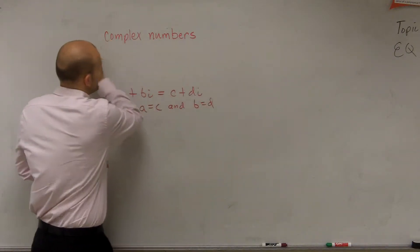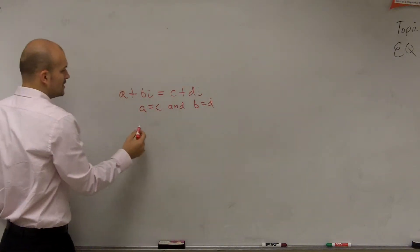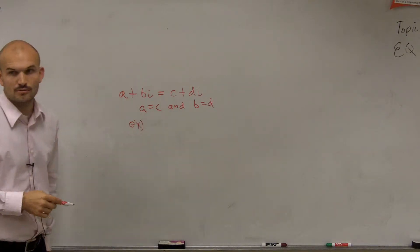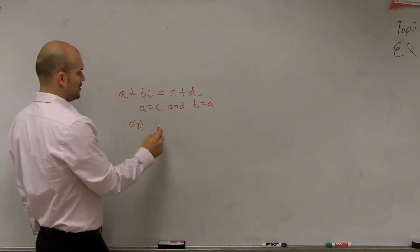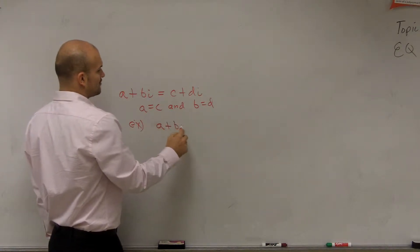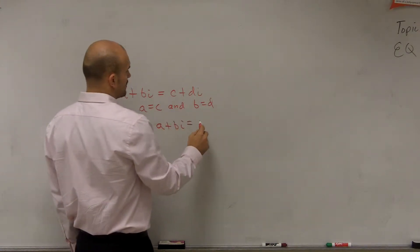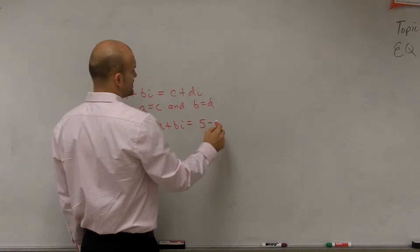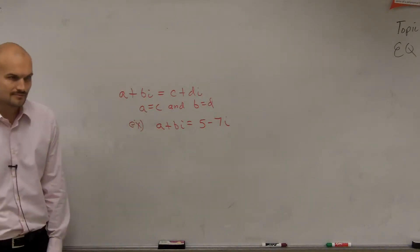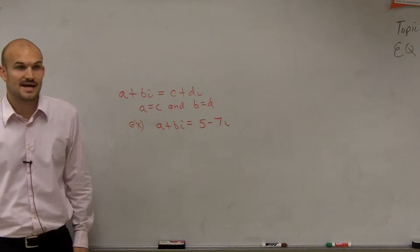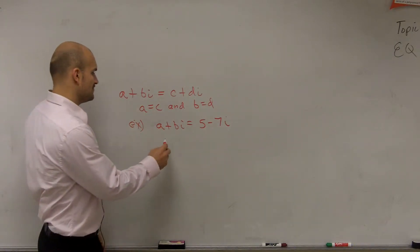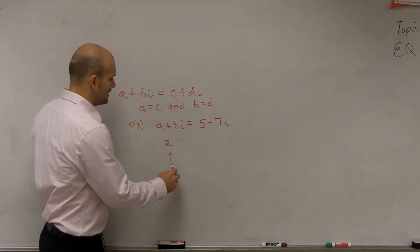Let's look at an example of when that would be true. Let's start with something easy and then work with something a little more difficult. Let's say I gave you a plus bi is equal to 5 minus 7i. Find the values of a and find the values of b.